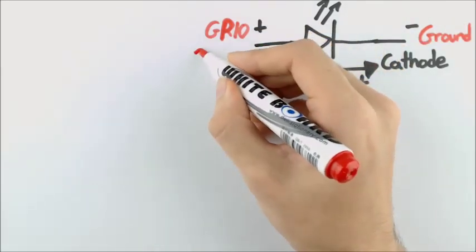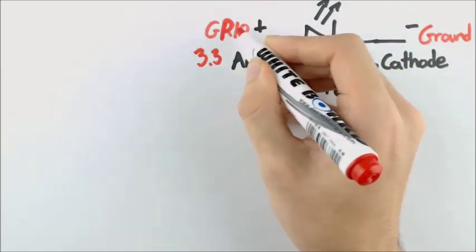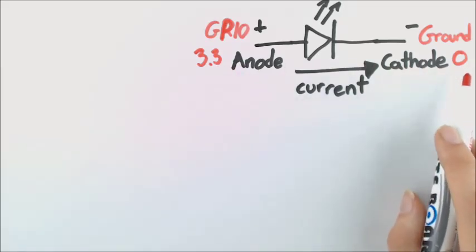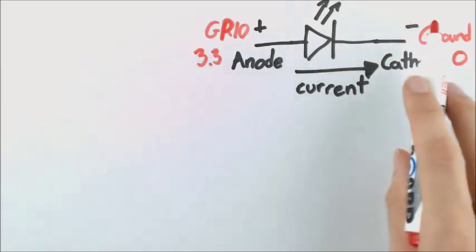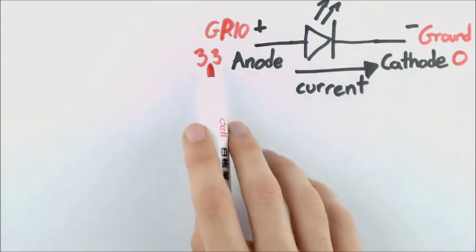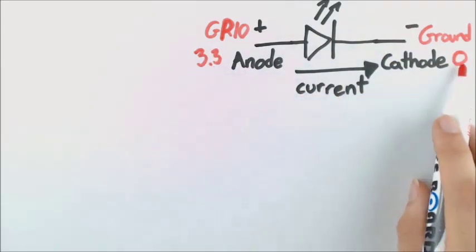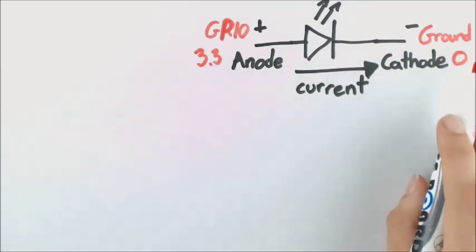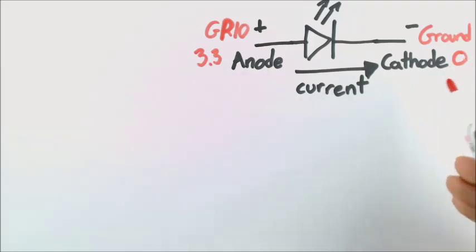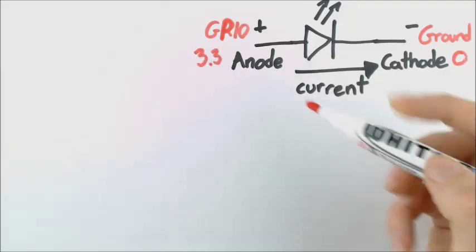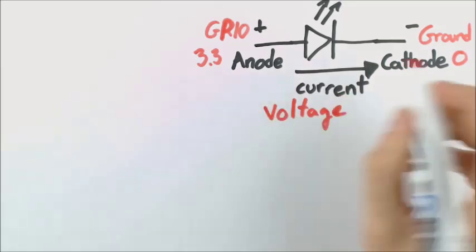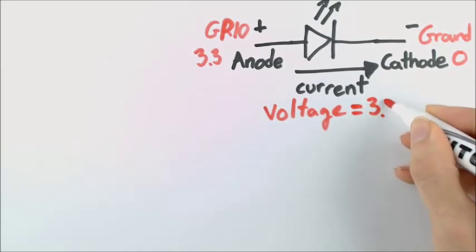Now the GPIO pin, we have about 3.3 volts coming out of that and ground will be 0 volts. The potential here is 3.3, the potential here is 0, and if we want to know how much voltage goes across the LED, we simply take the number that we start with and the number we end with from left to right, and we subtract them. So voltage is equal to 3.3 minus 0, which is simply 3.3 volts.